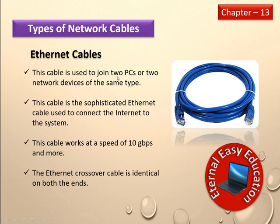The crossover ethernet cable is used to join two PCs or two network devices of the same type. This cable is a sophisticated ethernet cable used to connect the internet to the system. This ethernet cable works at a speed of 10 gigabytes per second. The ethernet crossover cable is identical on both ends — meaning it looks the same at both ends.